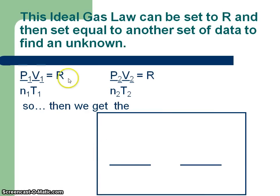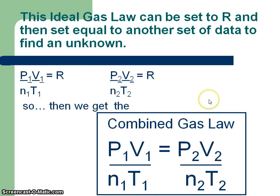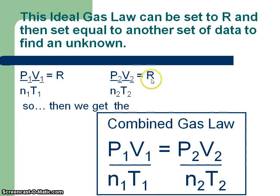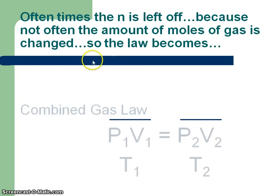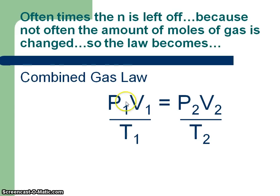The ideal gas law can be set equal to R. If we have two sets and set them equal to R, we get what we call the combined gas law: P₁V₁ / N₁T₁ = P₂V₂ / N₂T₂. That way we can set two systems equal to R and figure out — if I move pressure here and temperature to this — what's going to happen to the volume. The N is often left out because usually we're not changing the moles, but if they're the same on both sides, they cancel out.